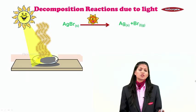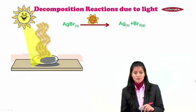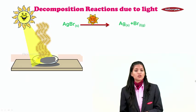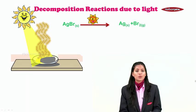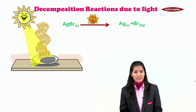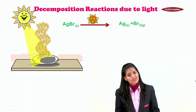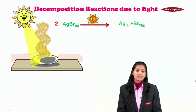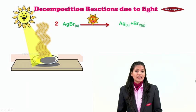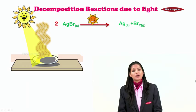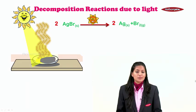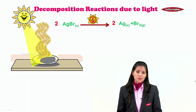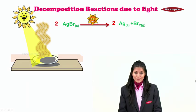Now next question would be is the reaction balanced? Obviously not, because we can see on right side bromine is 2, left side it is 1. So we need to balance on left side as well, making it 2AgBr, but if we make 2AgBr, Ag becomes 2. So you need to balance on the right side as well, making it 2Ag + Br2. Now the reaction is balanced.